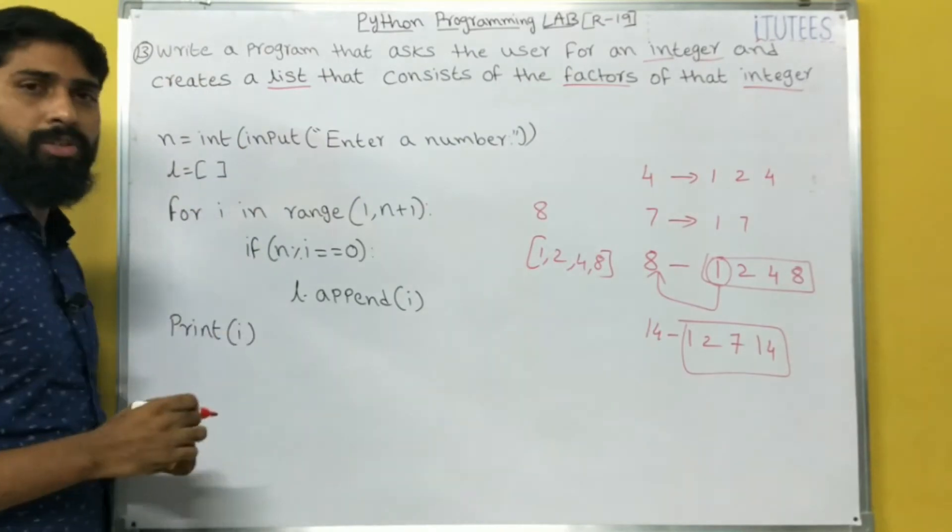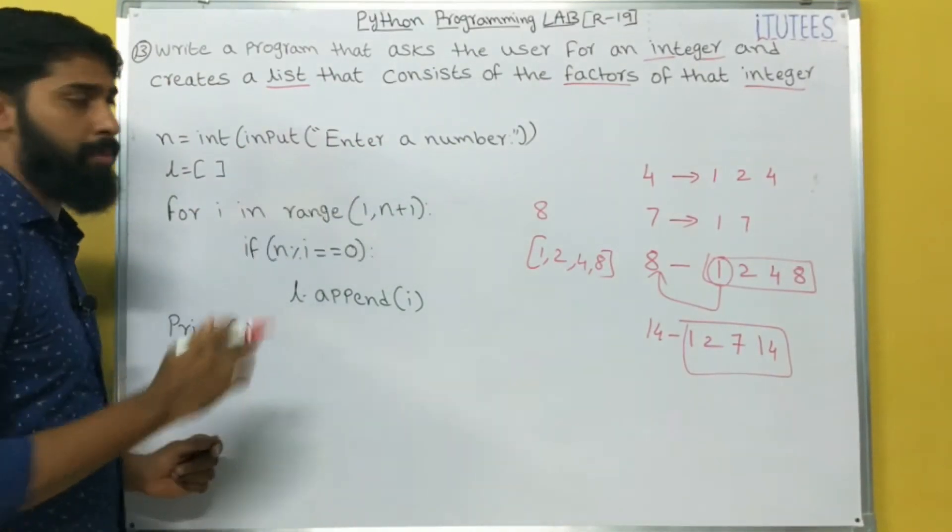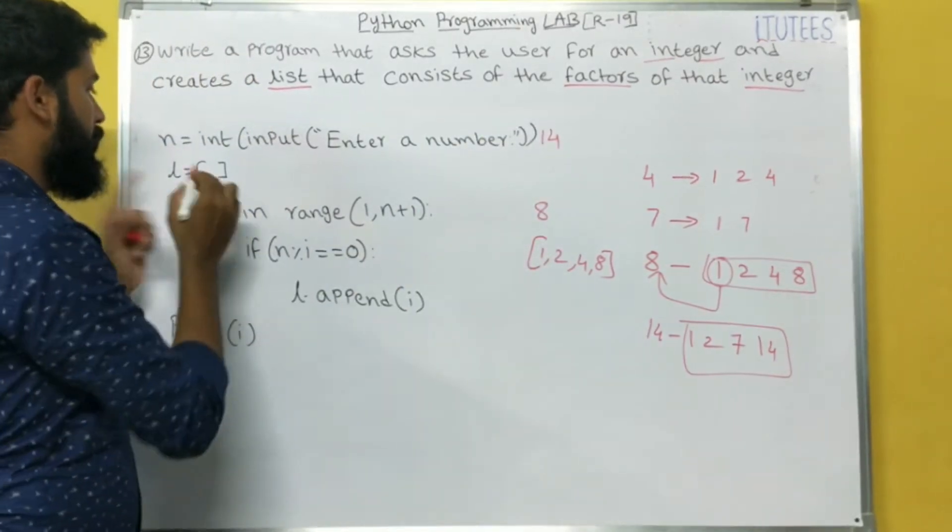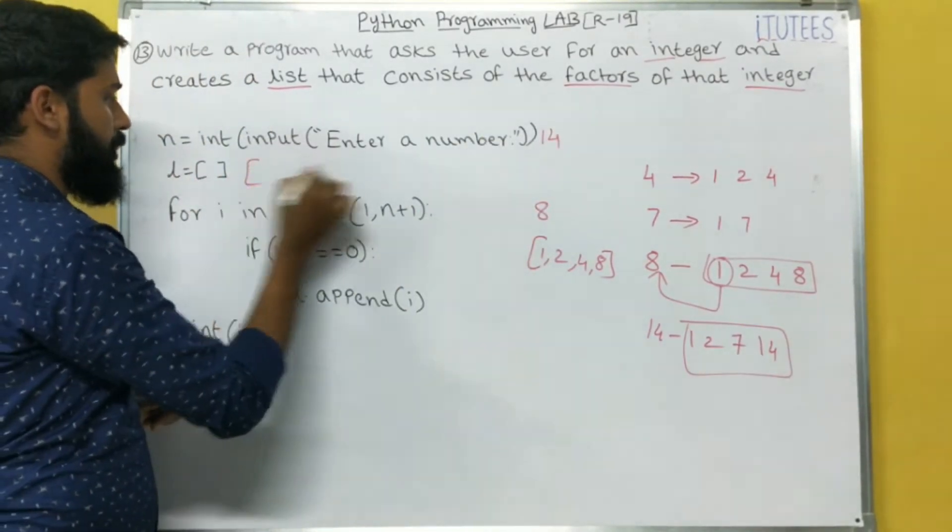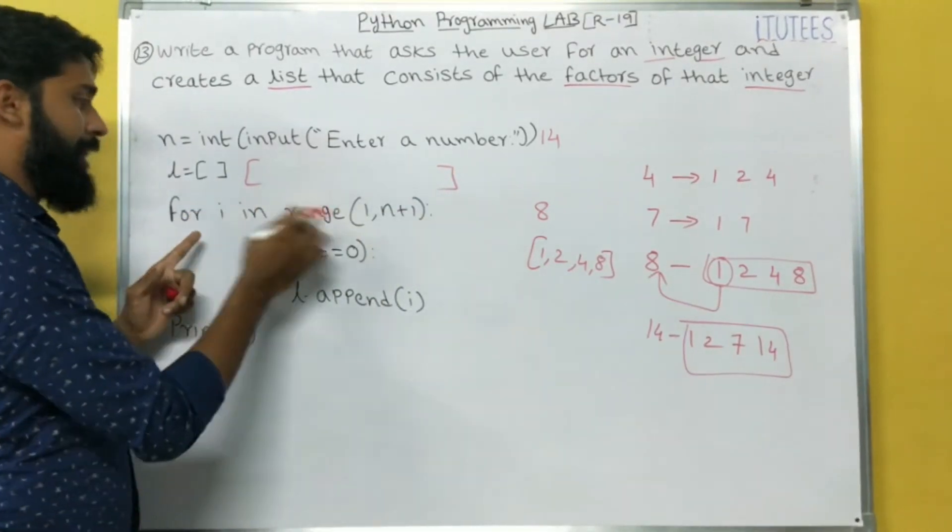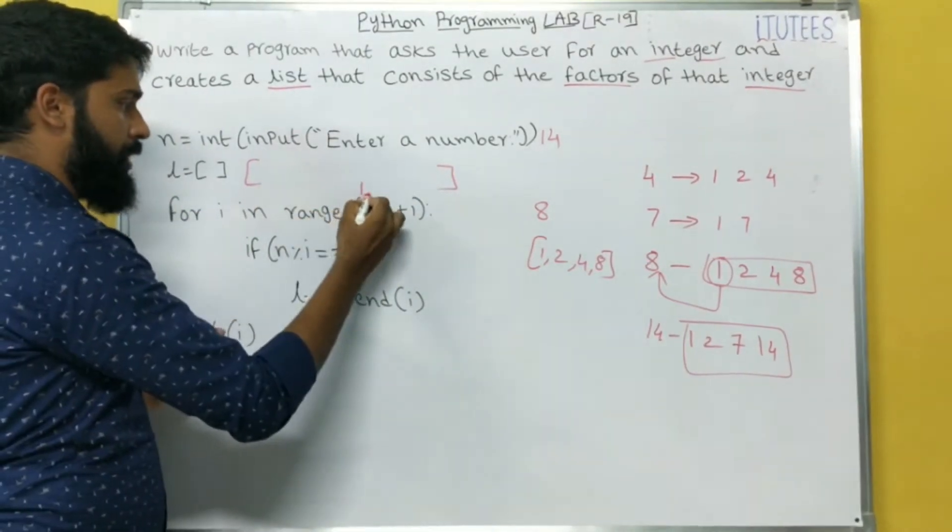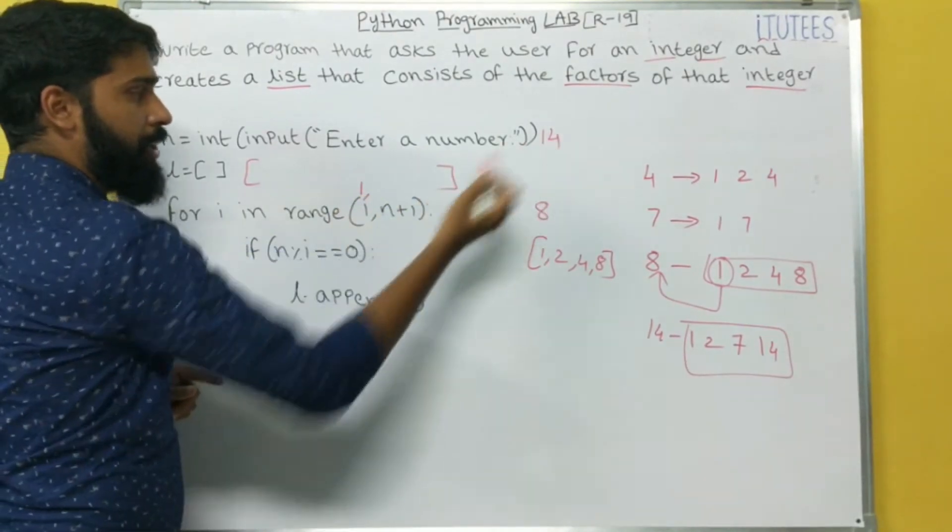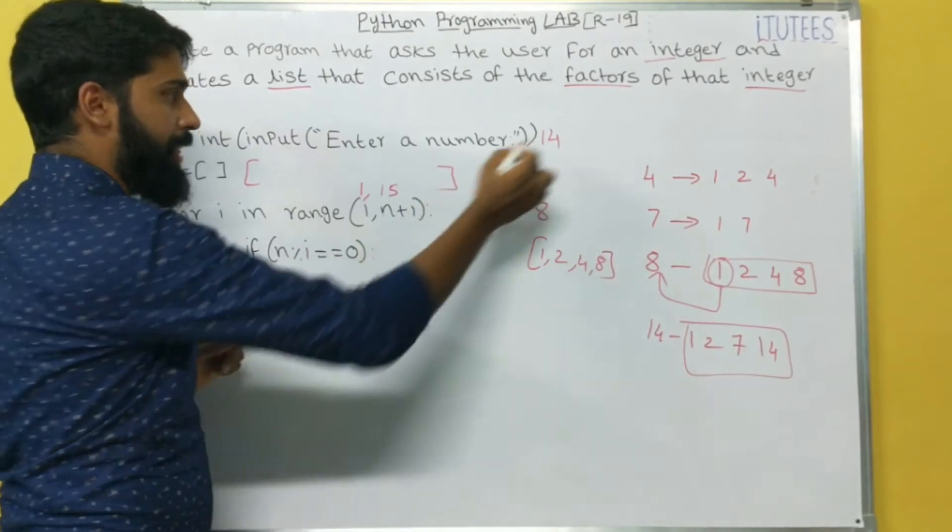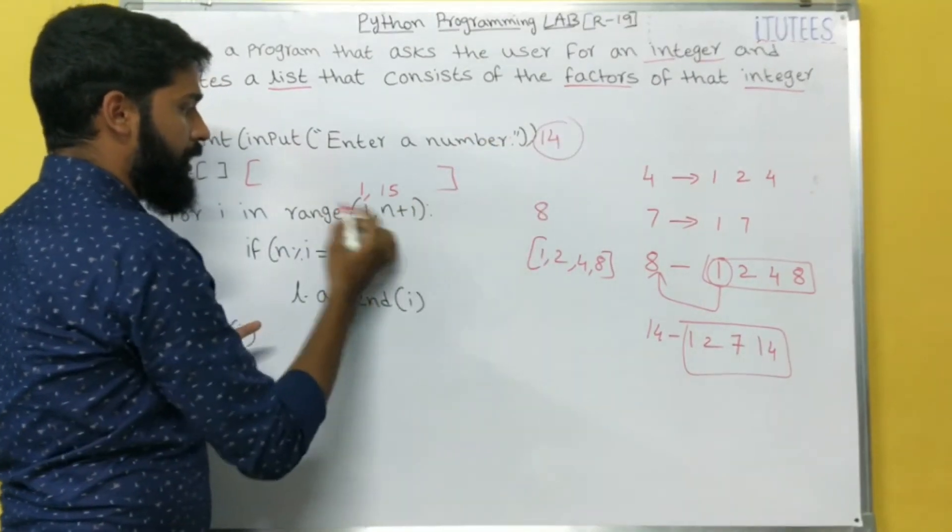So n equals to int of input, enter a number. In this case, I am giving 14. So I am taking one empty list. This is the empty list to store the factors. So for i in range of 1, comma. So what is n value? 14. 14 plus 1 means 15.